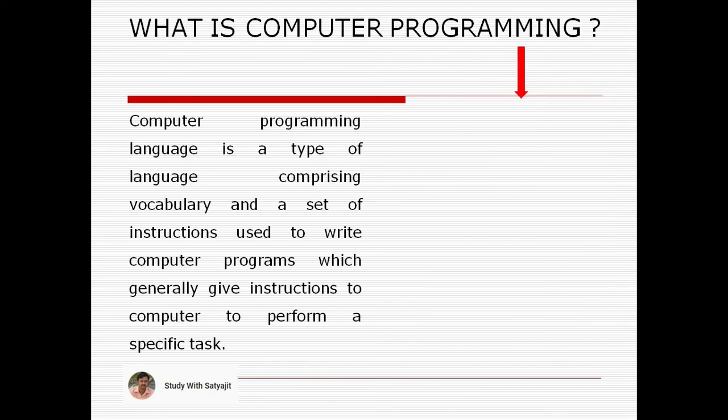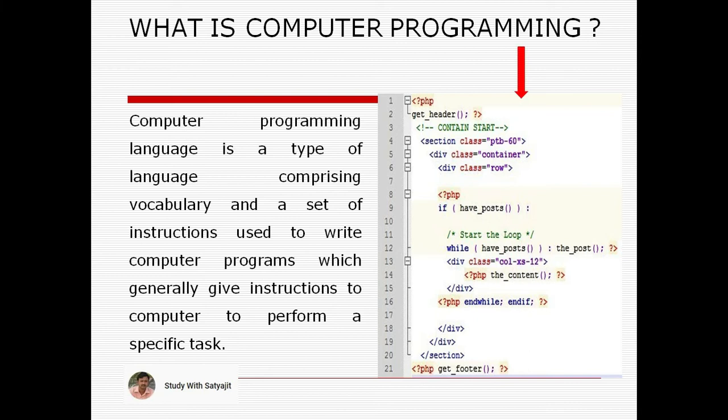Computer programming language is a type of language comprising vocabulary and a set of instructions used to write computer programs, which generally give instructions to a computer to perform a specific task. Let me give you an example for better understanding.